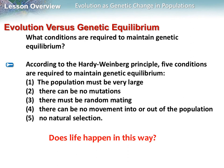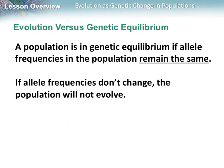The Hardy-Weinberg principle says all five conditions must be met for no evolution to occur, but we know life doesn't really happen this way. There are mutations frequently, mating is not always random — for example, the most beautifully colored male peacocks get to mate most often — and natural selection does occur. A population is in genetic equilibrium only if allele frequencies remain the same; if they don't change, the population will not evolve. We know this doesn't happen very often, so evolution happens more often than not.